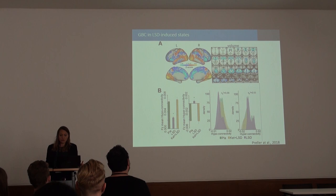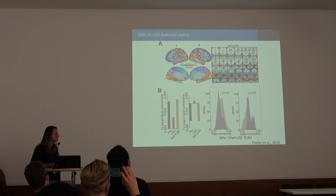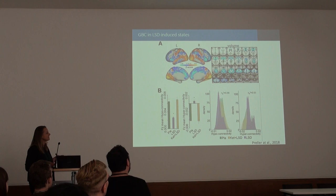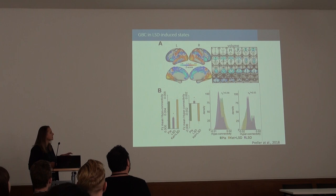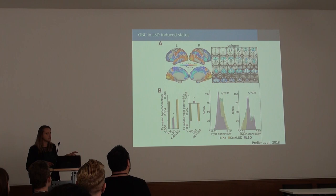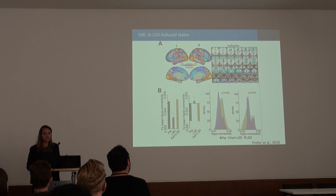Obviously, we also wanted to look at brain data. What does the brain look like on LSD? This is the closest thing I can show you. What you see here is functional connectivity, specifically global functional connectivity. The red colors indicate brain areas that are more strongly connected to the rest of the brain under LSD, whereas the blue areas are less strongly — more weakly — connected to the rest of the brain under LSD.